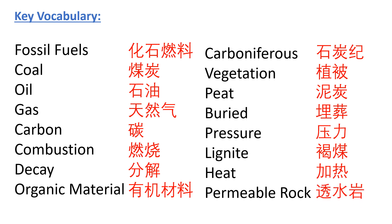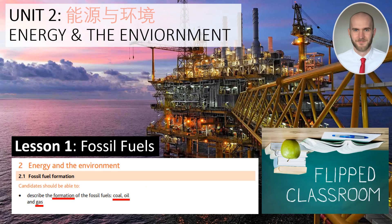Oil and gas is slightly different. The ingredients are normally small organisms like zooplankton, and they need to be trapped within permeable rock — rock with lots of pore space or holes — under an impermeable rock layer. That's the first lesson in Unit 2 of the Flipped Classroom series. I hope you enjoyed, and I will see you in class soon.